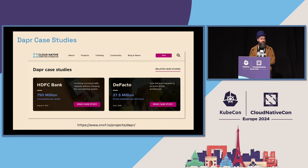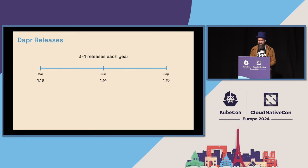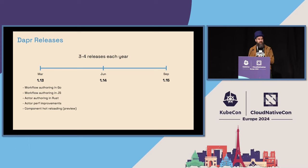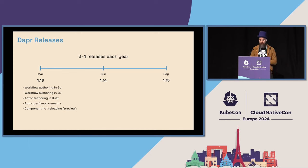There's also a deprecation section on the CNCF website where you can read more about how big enterprises are using Dapr. We do three to four releases a year; earlier this month we released version 1.13, which adds Go and JavaScript support for workflow authoring.